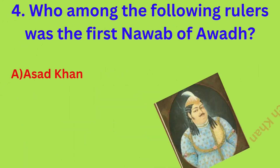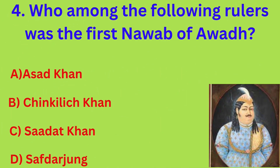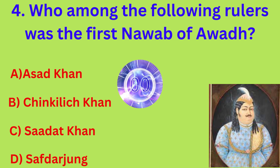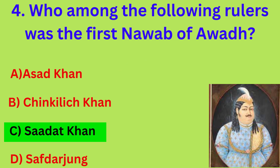Who among the following rulers was the first noble to become an independent governor? The correct answer is option C: Sadat Khan.